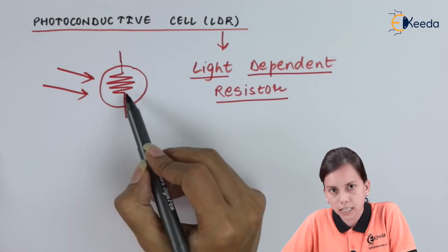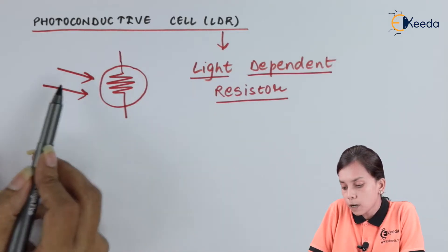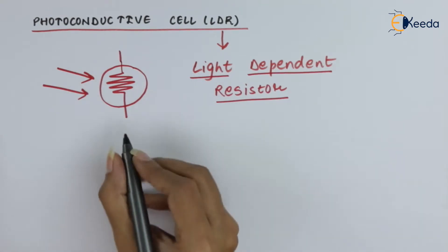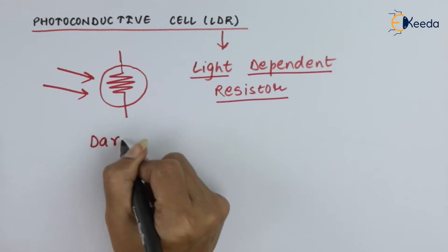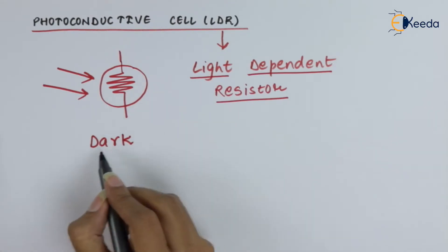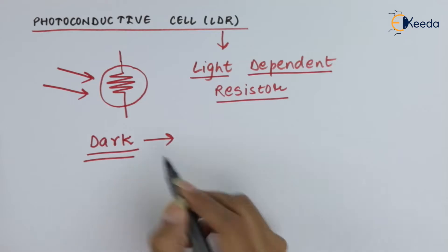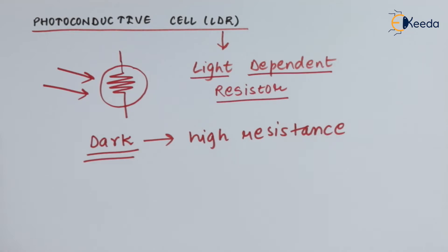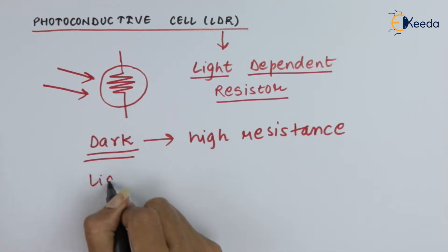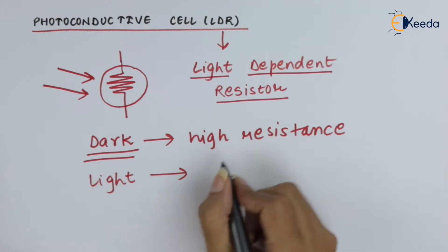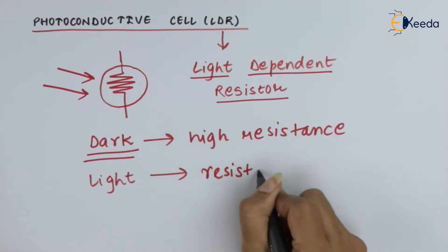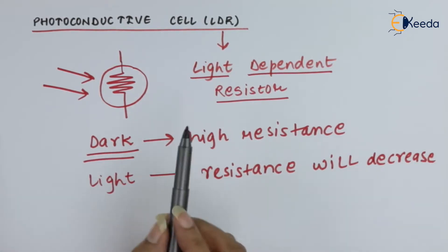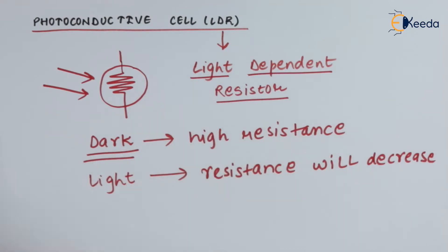It is a resistor such that its resistance will vary when we apply some light. When it is kept in dark — that is, no light is present — it will produce very high resistance. And if we are placing it in light, the resistance will decrease. This is what is actually happening in this resistor.